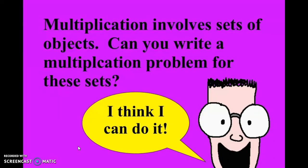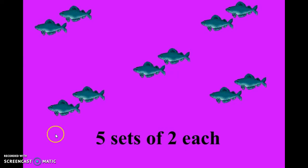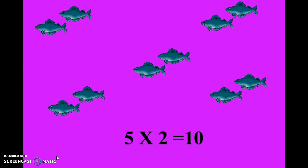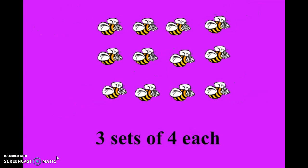Multiplication involves sets of objects. Can you write a multiplication problem for these sets? For example, you have five sets of two each — five sets of two fish. So how many fish are there? Five times two equals ten.